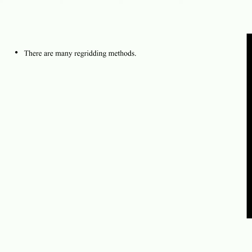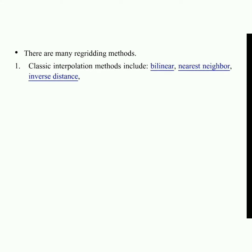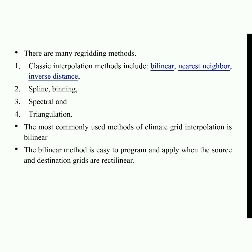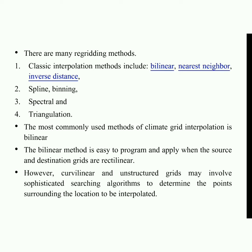There are many re-gridding methods. Classic interpolation methods include bilinear, nearest neighbor, inverse distance, spline, binning, spectral, and triangulation. The most commonly used method for climate grid interpolation is bilinear. The bilinear method is easy to program and apply when the source and destination grids are rectilinear. However, curvilinear and unstructured grids may involve sophisticated searching algorithms to determine the points surrounding the location to be interpolated.